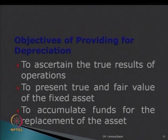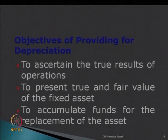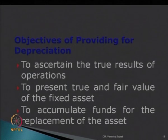Why do we need to provide depreciation? There are three objectives. First, to ascertain the true results of operations — the value of machinery being used is actually getting reduced, and unless you account for that, true results won't be known. Second, to present the true and fair value of assets at year end. Third, to provide funds for replacement — if machinery has a useful life of 5 years, every year we should accumulate some money so that we have enough funds at the end of 5 years to buy new machinery.